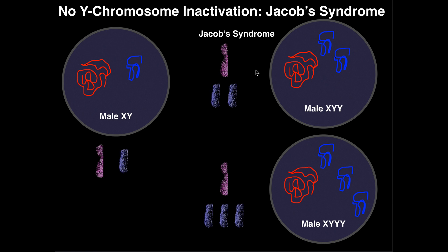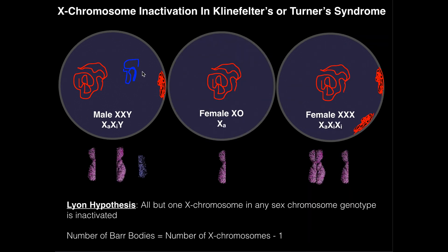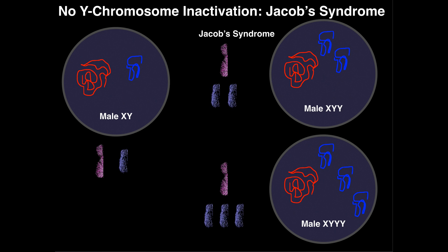Jacob's Syndrome is similar in a sense to some of these other conditions that we saw, such as Klinefelter's, Turner's syndrome, and XXX syndrome, in the sense that it's an abnormal number of chromosomes — it's an aneuploidy. However, this one is not an aneuploidy of the X chromosome; this one is an aneuploidy of the Y chromosome.